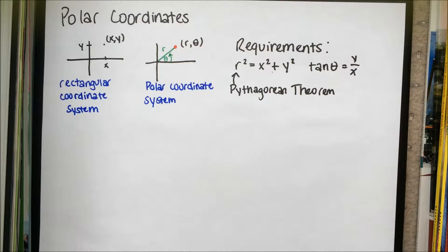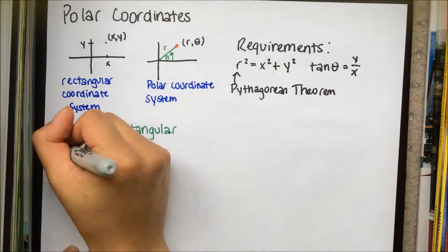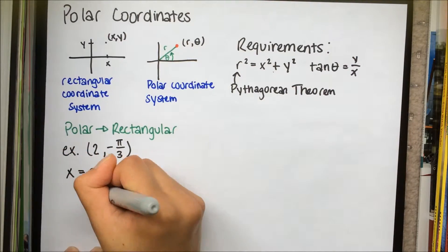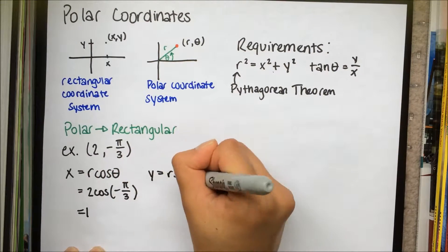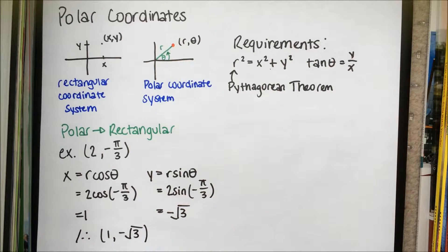We will now convert polar coordinates to rectangular coordinates. Let's use the polar point 2, negative pi over 3. By using our knowledge of trigonometry, we can plug in the r and theta values to get x and y. The rectangular coordinate is 1, negative root 3.